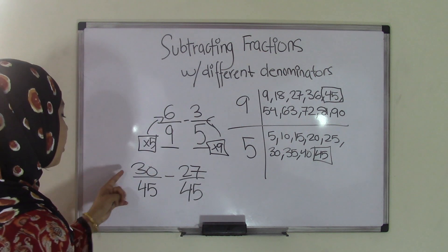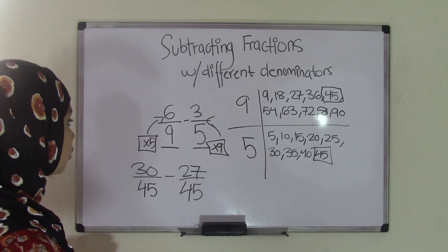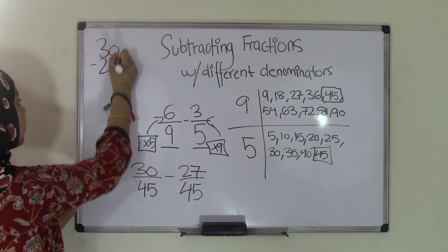So that's our numerators, 30/45 minus 27/45. So that's pretty much the last thing that you have to do to find your answer. You take this 30 minus 27. So 30 minus 27.